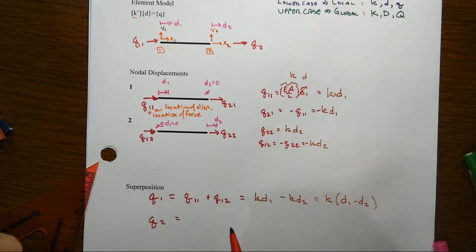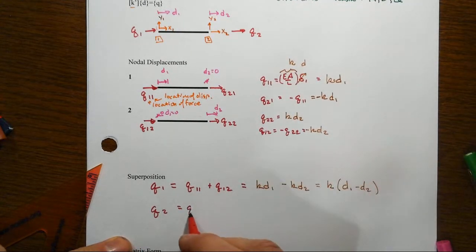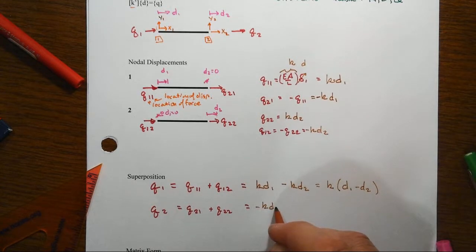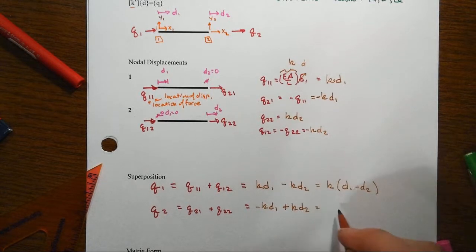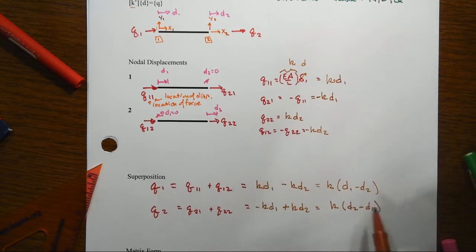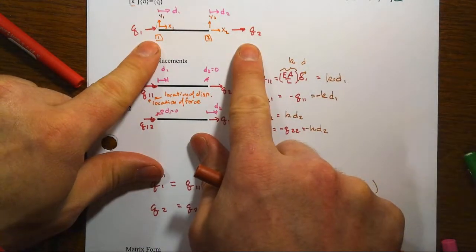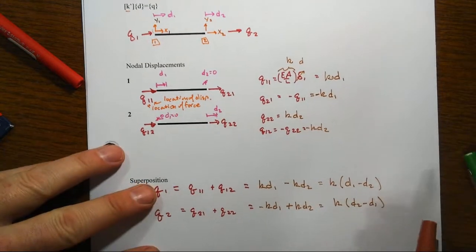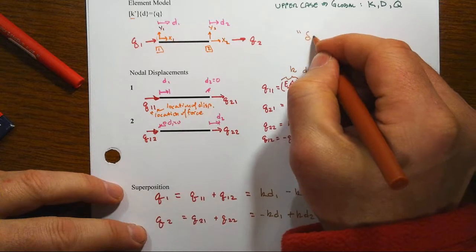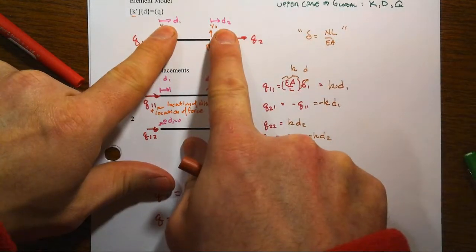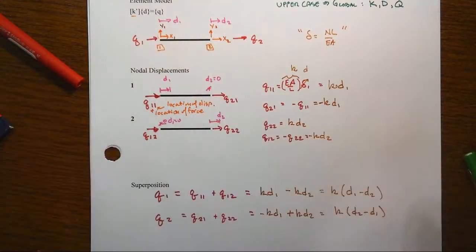Now, q2 is going to be then by superposition, we've got q21 plus q22, and then when we substitute in there, we get a minus k times d1 plus k times d2, which would of course be equal to the same thing as the difference between those two. So these two turn out to be equal opposite, which is what we would expect. Notice again this difference. We're breaking down the simple thing that in general, delta equals NL over EA into now tying everything to the specific displacements at the ends that will then ultimately form what that deformation is.